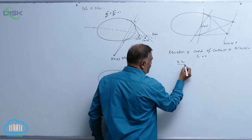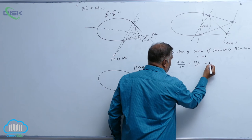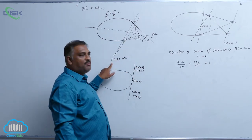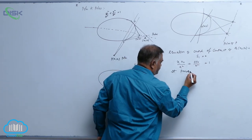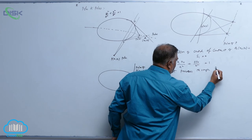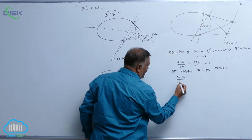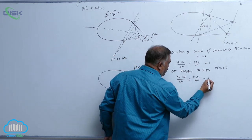And this chord of contact passes through P(x1, y1). It passes through P(x1, y1), so it will become x1 x0 by a square plus y1 y0 by b square equal to 1.